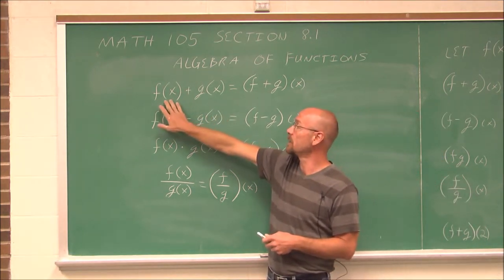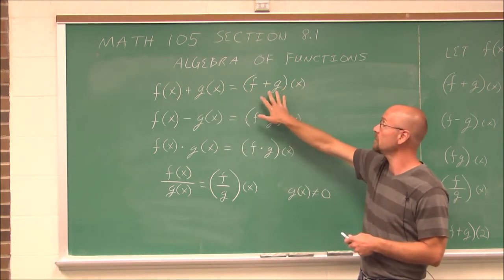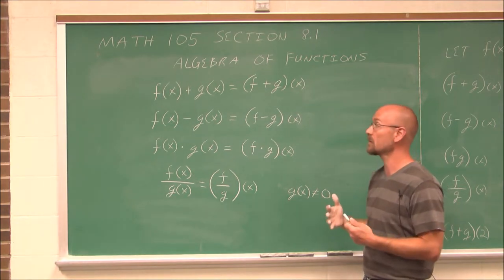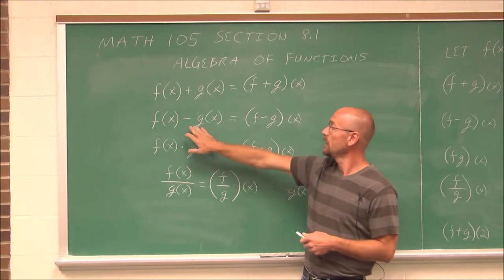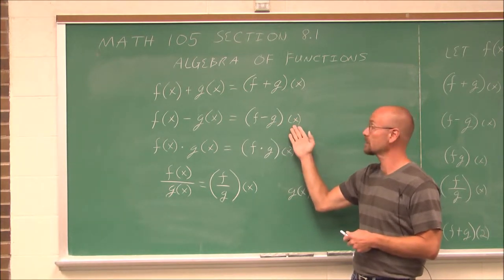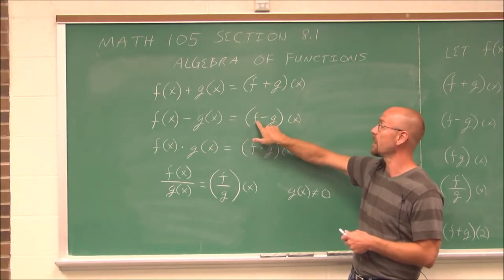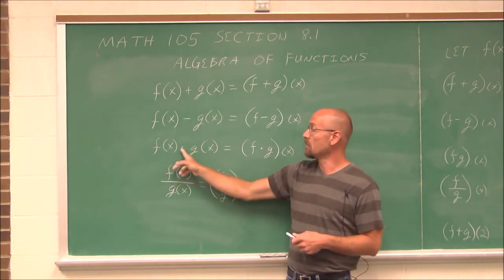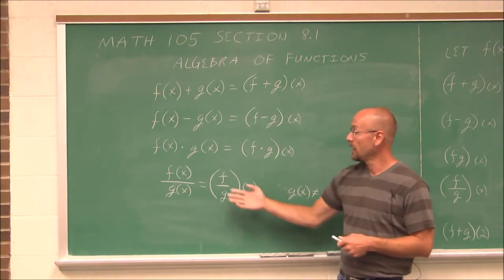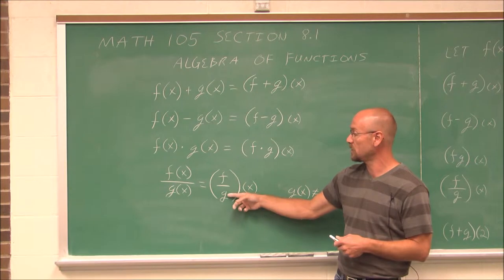If we want to add the function f of x plus g of x, we can rewrite it as f plus g of x. Both of these functions have the input value of x, and that's a requirement in order to add or subtract functions — they have to have the same input value. Similarly, f of x minus g of x can be rewritten as f minus g of x. If we want to multiply two functions, f of x times g of x, we can rewrite it as f times g of x. And with division, f of x divided by g of x can be rewritten as f divided by g of x.